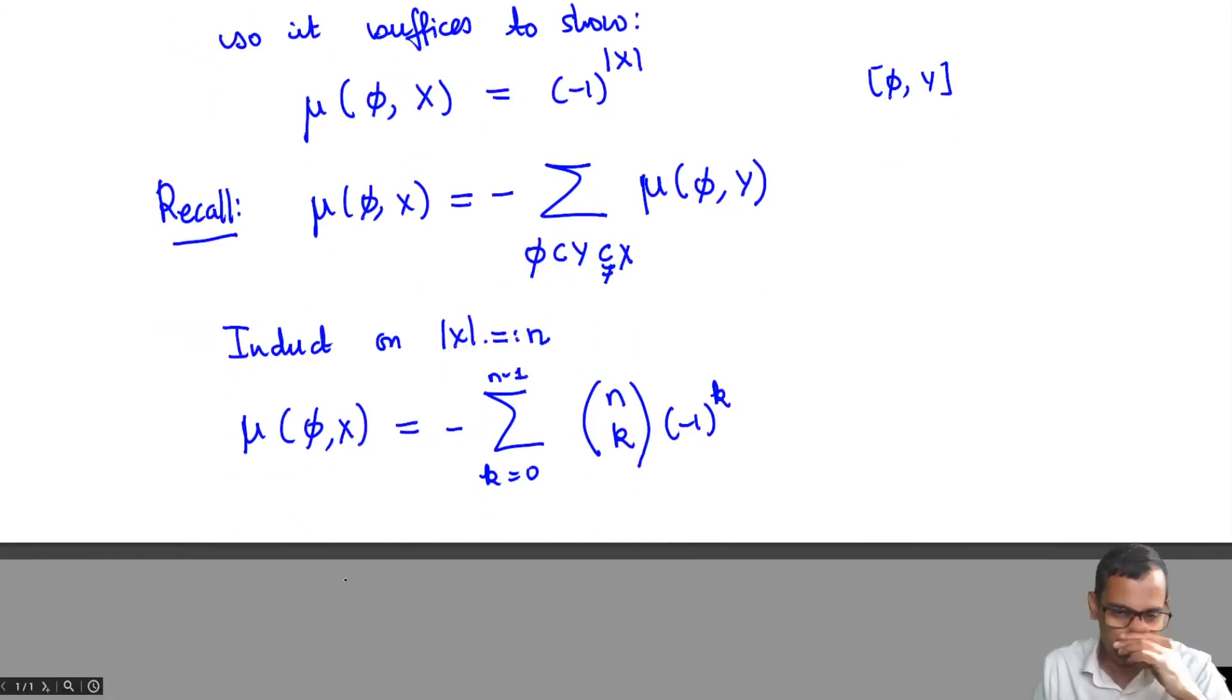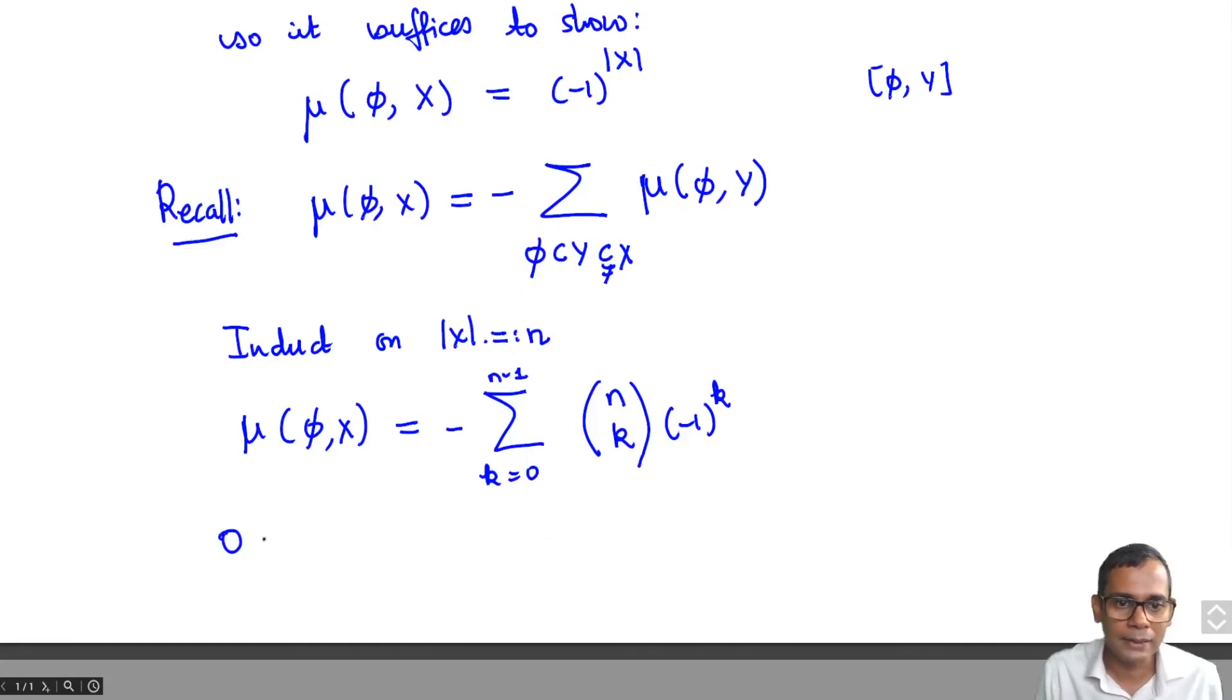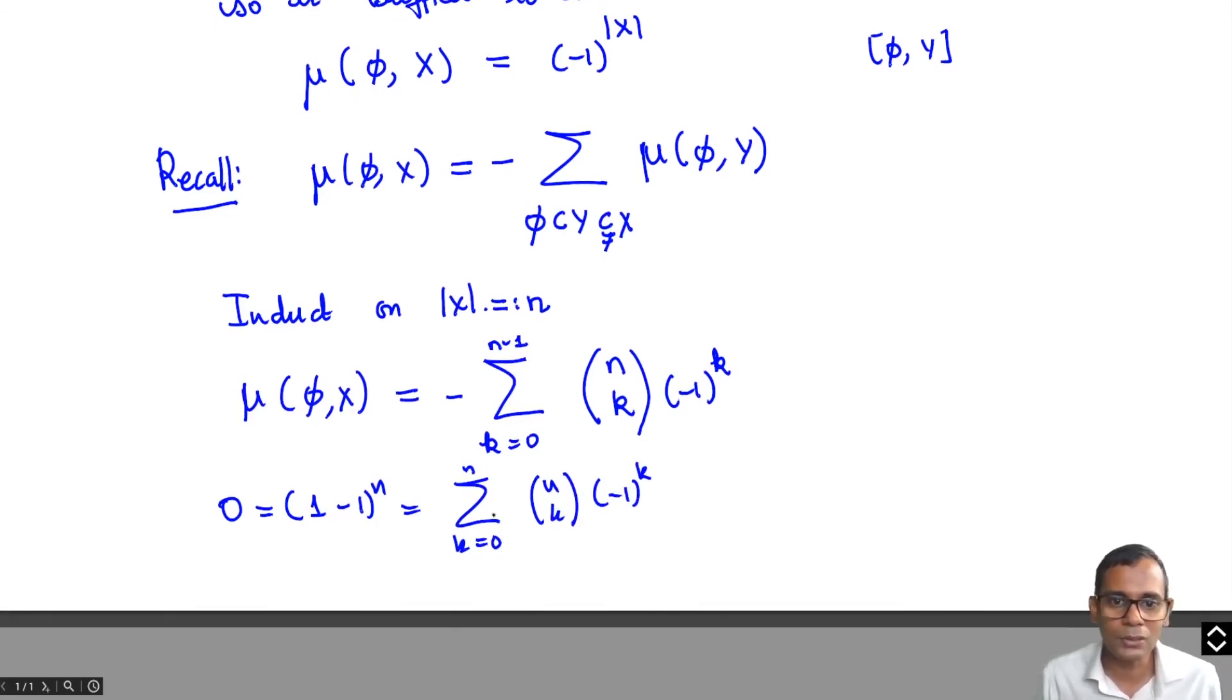But the binomial theorem tells us that 0, which can be written as (1-1)^n, equals summation k goes from 0 to n of (n choose k)(-1)^k. So what that means is that mu(phi, X) has to equal (-1)^n, because that's the only term. You just take the last term of this binomial expansion out of the left side and you get exactly that this equals (-1)^n.